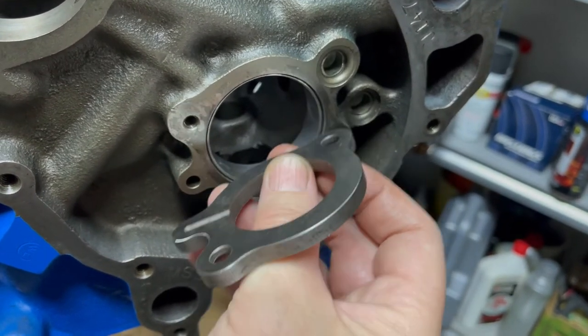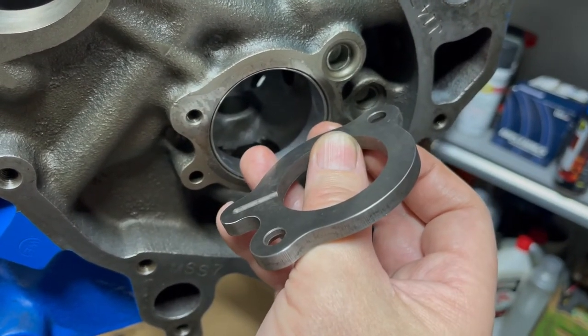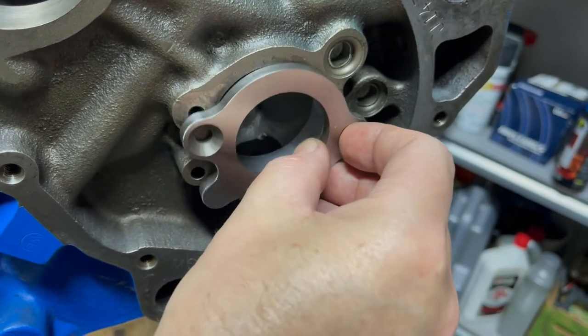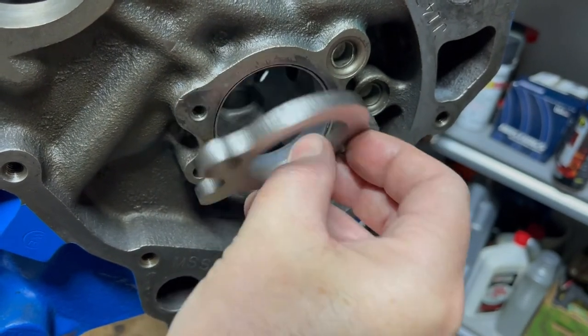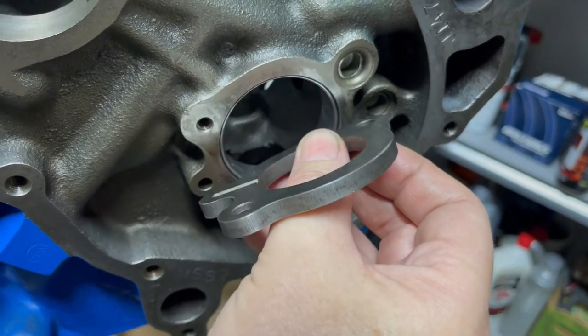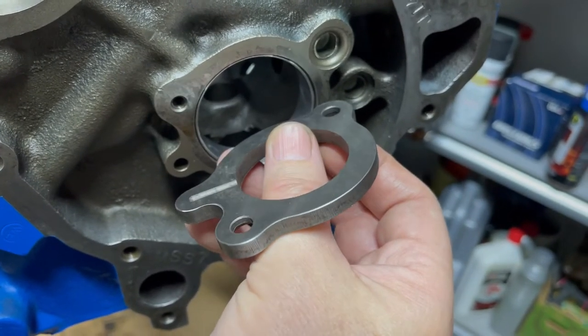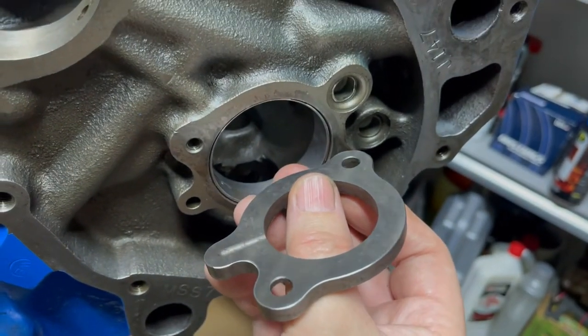I don't know which way the oil comes. Does it come out of here and then go up to the bearing? Or does it come from the bearing down? I don't know. But either way, it's going to be there now.